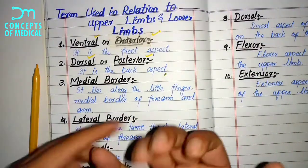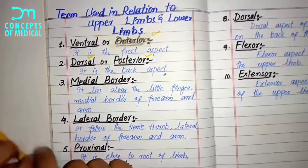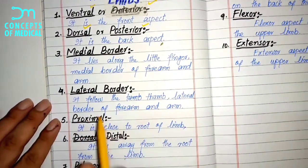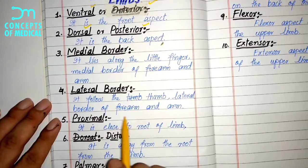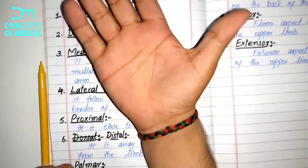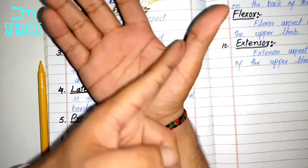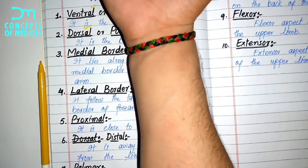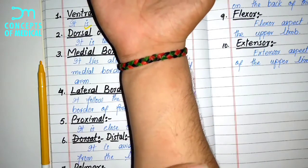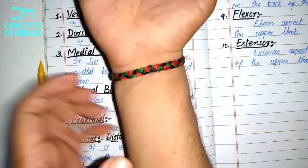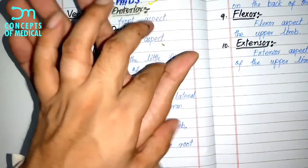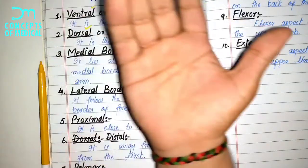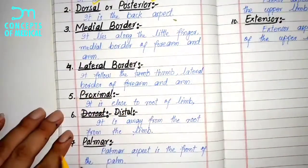The fourth term is the lateral border. It follows the thumb — the lateral border of the forearm and arm. Any structure along the thumb region uses the lateral term. For example, the radius bone is at the lateral side, also the thumb side, so we use the lateral term for describing these structures.